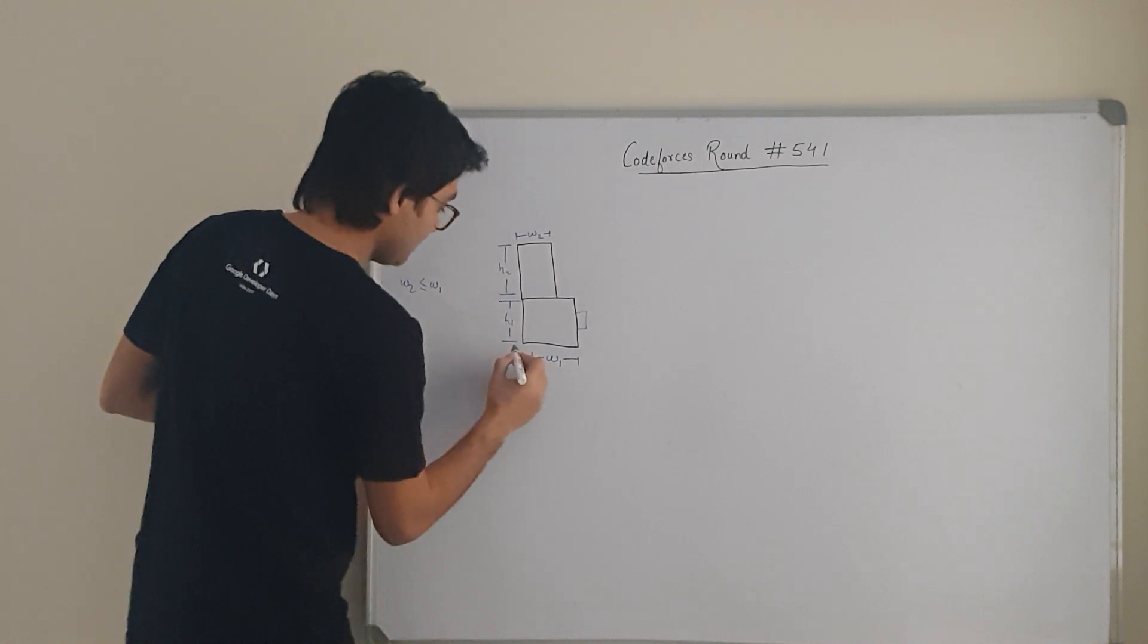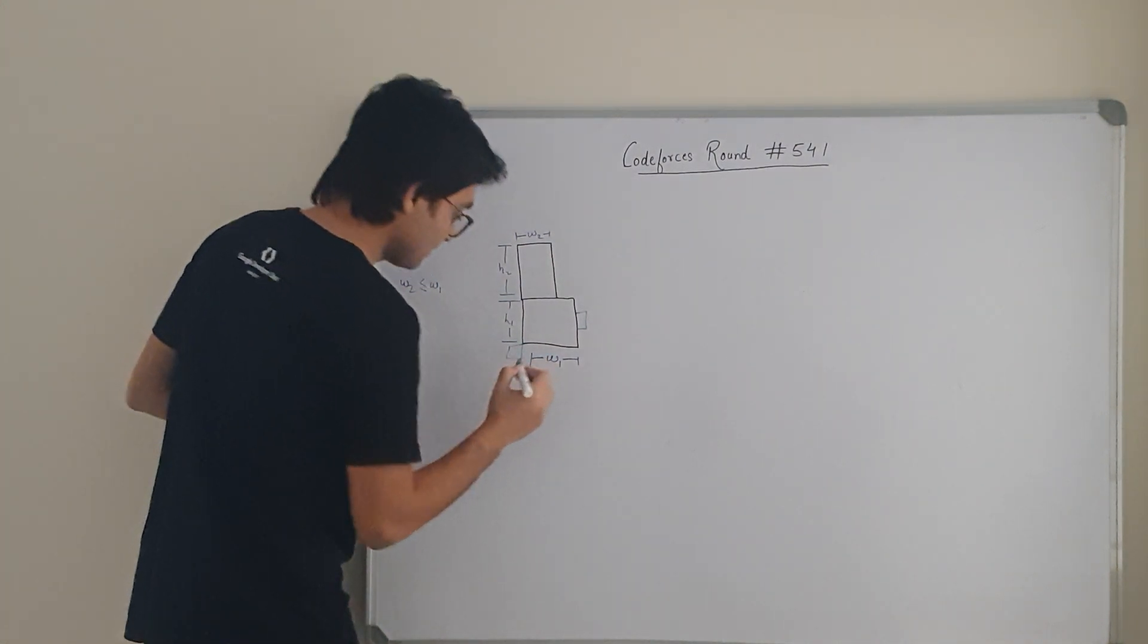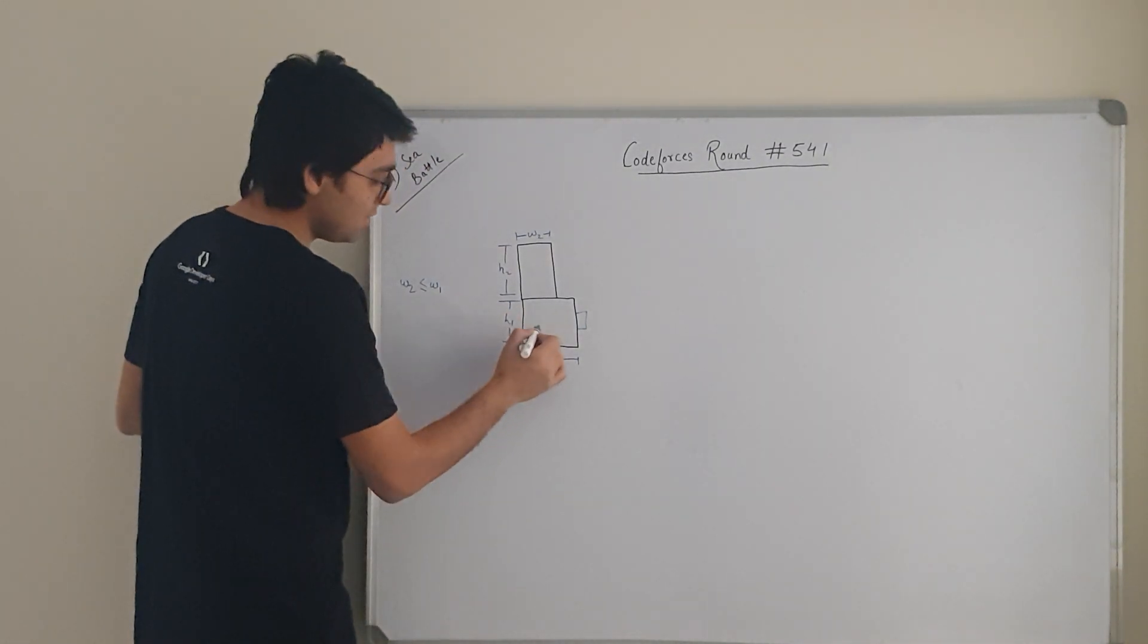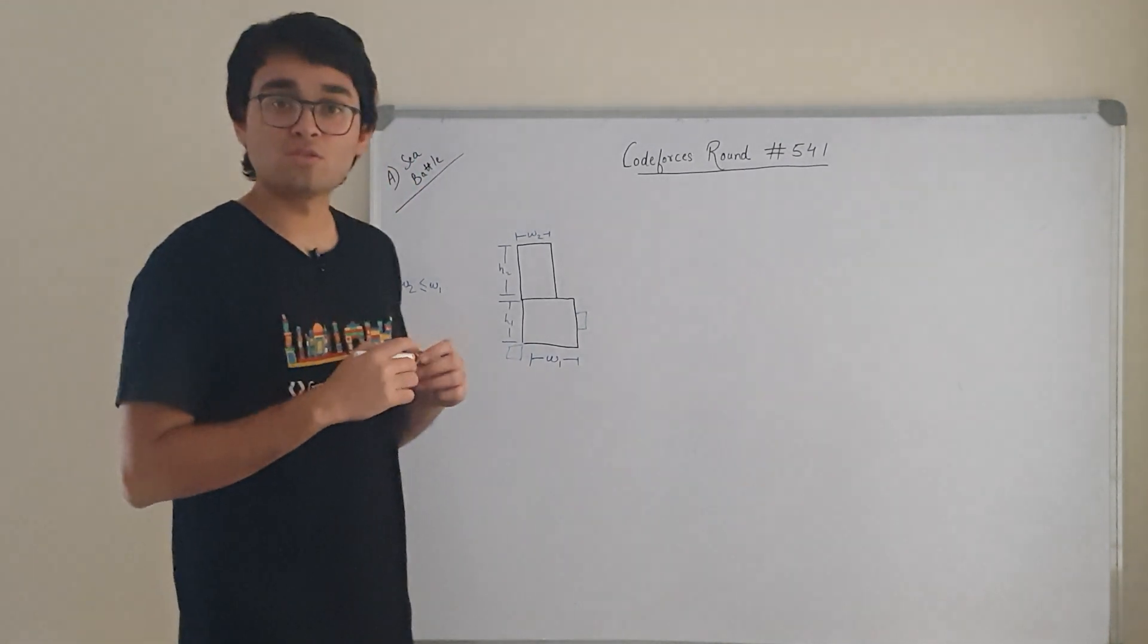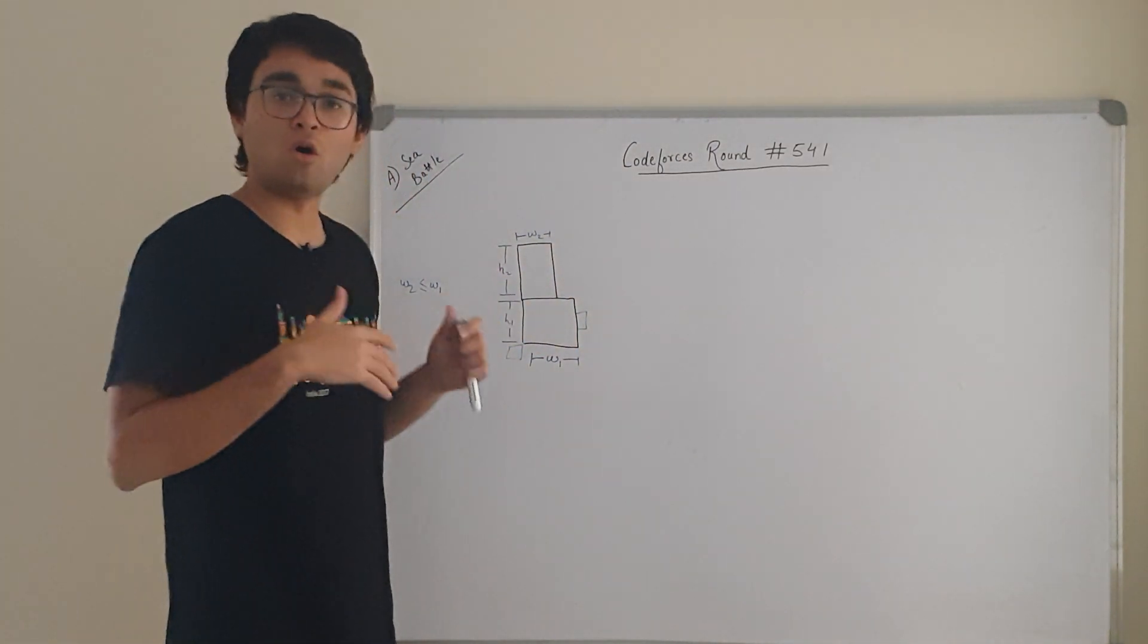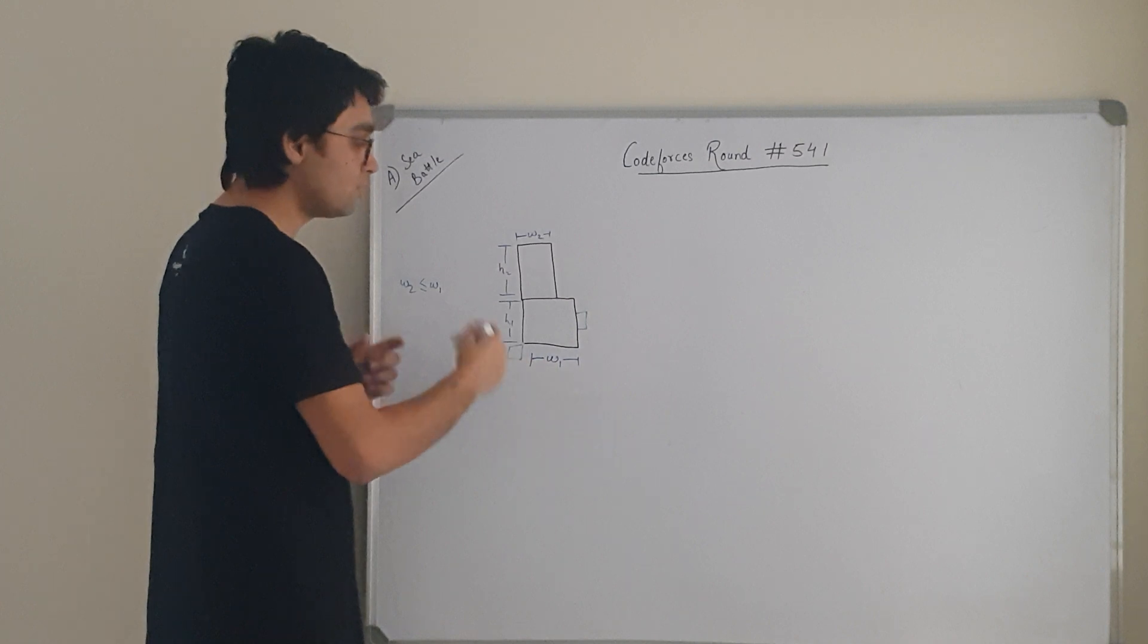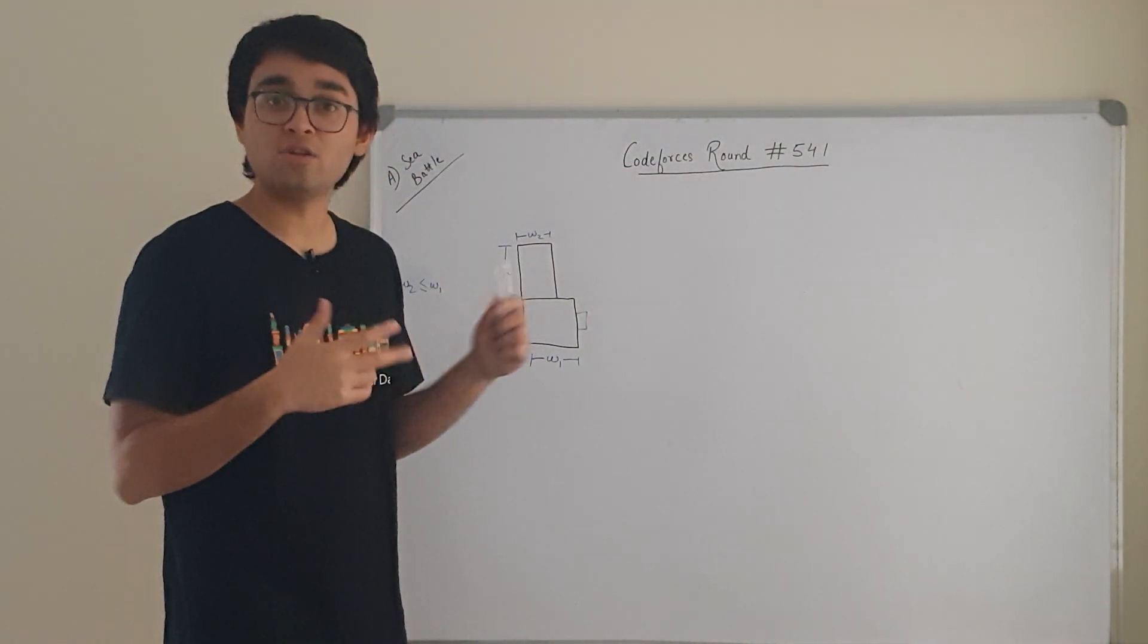Similarly, if you have a cell here, this is also a neighbor. Why? Because this cell and this structure are sharing the same corner. They have defined the neighbor as a cell which shares a common edge or even a corner. Now you need to tell the count of these. How many cells are neighbors to this structure?